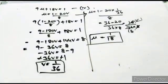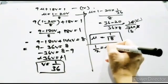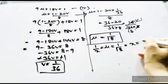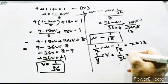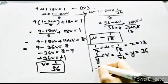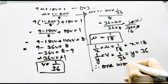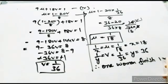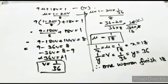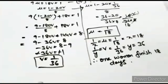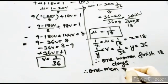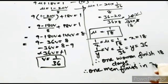Since 1/x = u = 1/18, we get x = 18. And since 1/y = v = 1/36, we get y = 36. Therefore, one woman finishes the embroidery work in 18 days, and one man finishes in 36 days.